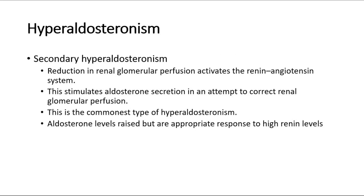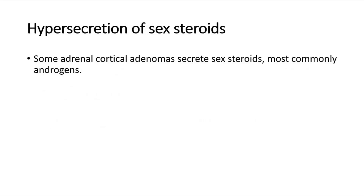Secondary hyperaldosteronism occurs when reduction in renal glomerular perfusion activates the renin-angiotensin system, stimulating aldosterone secretion in an attempt to correct renal glomerular perfusion. This is the commonest type of hyperaldosteronism. Aldosterone levels are raised but represent an appropriate response to high renin levels. Third is the hypersecretion of sex steroids — some adrenal cortical adenomas secrete sex steroids, most commonly androgens.